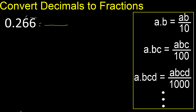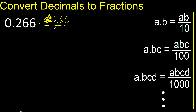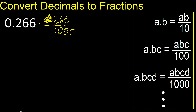First, all the number without the point. Here, always eliminate zeros. Here, always number one. After the point there are three numbers, therefore three zeros. Can be simplified because can be divided by the same number.